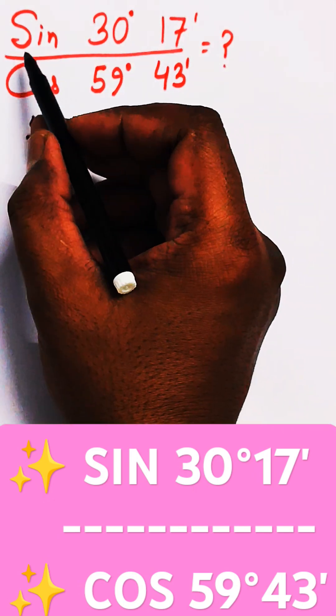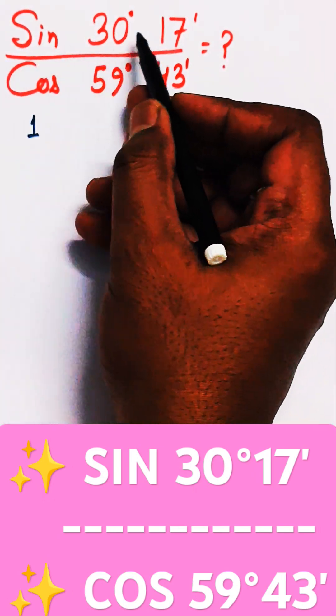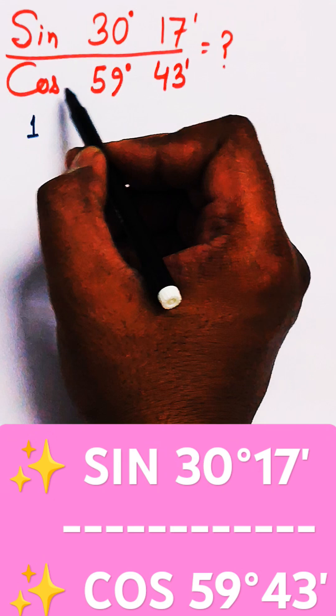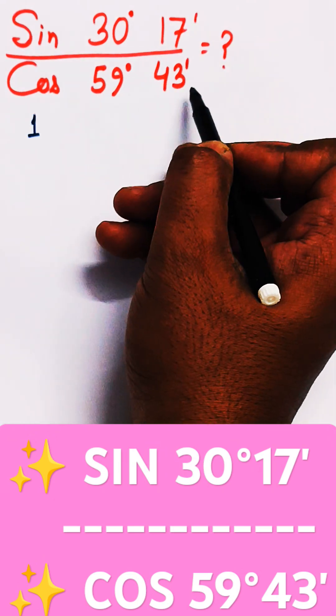In this question of trigonometry, we need to find the value of sin 30°17' divided by cos 59°43'.